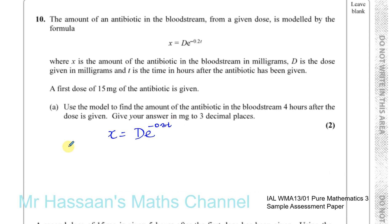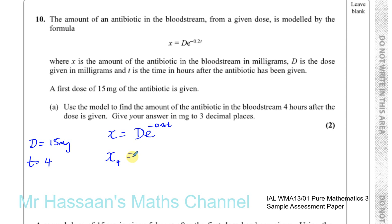So what we're told is the first dose, D is equal to 15 milligrams, and we're going to find the amount of antibiotic after four hours, so T equals four. So the amount of antibiotic after four hours is going to be D, which is 15, multiplied by E to the power of minus 0.2 times 4. So that should give us our answer for this question.